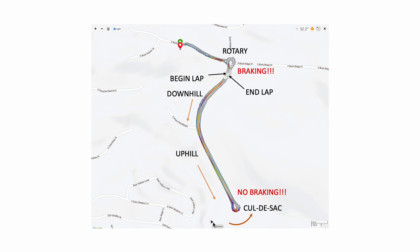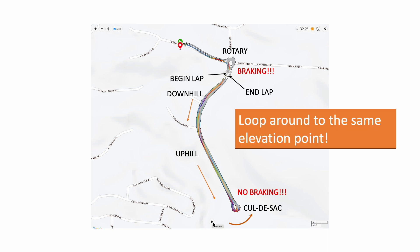That's the basic route I use for this kind of testing. What's really important is that we loop around to the same elevation point, so the net gain is zero, and we don't need to know the exact elevation in order to determine how aero our bike is.